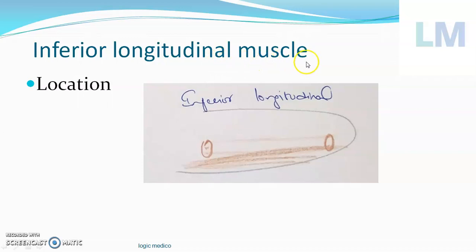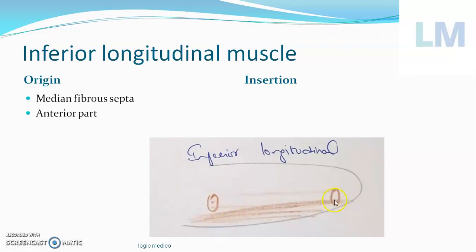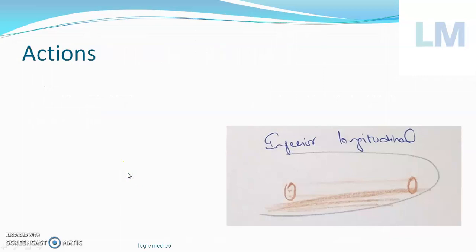Coming to the inferior longitudinal muscle — that is one of the intrinsic muscles. Its location is within the tongue, in the lower portion, oriented longitudinally. Coming to the origin and insertion: the origin of this muscle is from the wall called the median fibrous septum, specifically the anterior portion of the median fibrous septum. Insertion is to the mucous membrane of the tongue, diverging backwards towards the dorsal side. So from the tip it is diverging backwards.